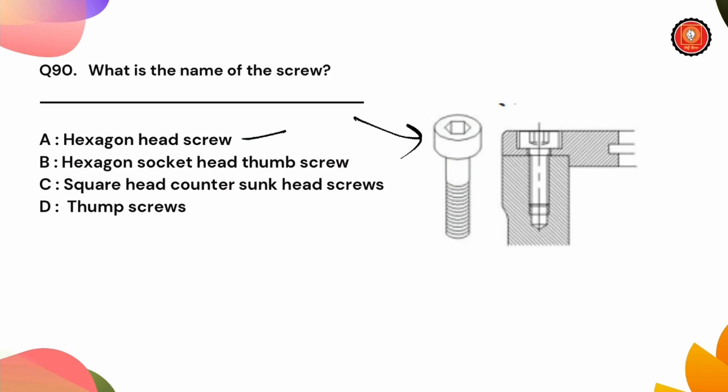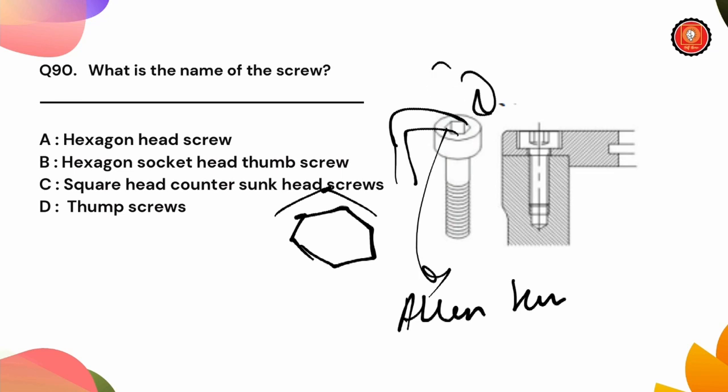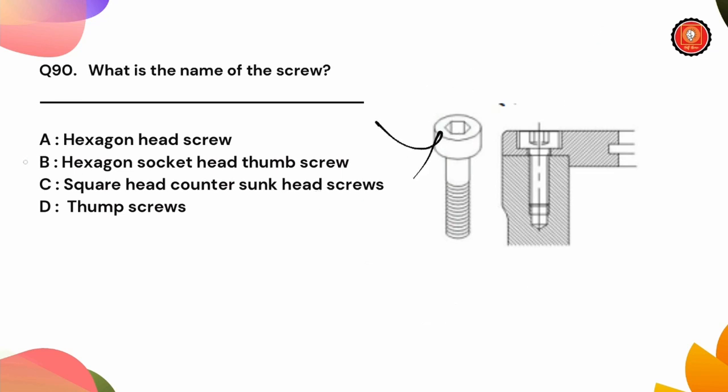Next question, what is the name of this screw? Options are hexagon head screw, hexagon socket head thumb screw, square head countersunk head screw, or thumb screw. You can see it is completely full circular with a hexagon socket. This is not an old conventional screw. We rotate it with an Allen key. The answer is hexagon socket head thumb screw.